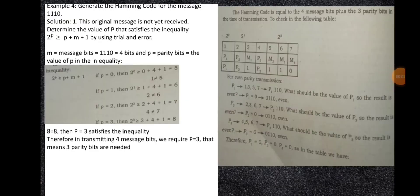Example 4: Generate the Hamming code for the message 1110. This original message is not yet encoded. To determine the value of P that satisfies the inequality 2^P ≥ P + M + 1 using trial and error, where M = 1110 = 4 bits and P is the number of parity bits: if P = 3, then 2^3 ≥ 3 + 4 + 1, which gives 8 ≥ 8. This satisfies the inequality. Therefore, in transmitting 4 message bits, we require 3 parity bits.